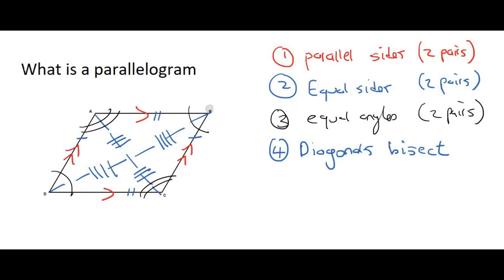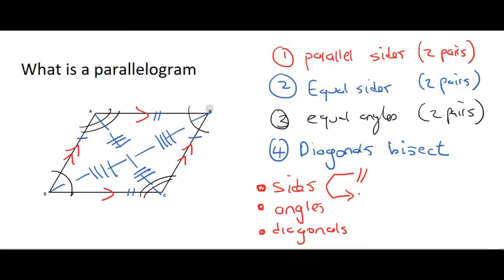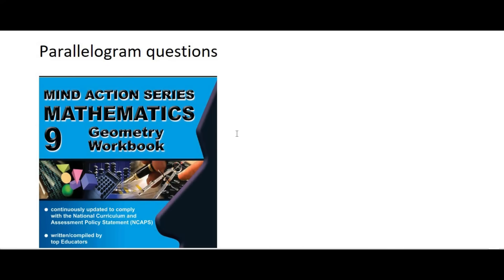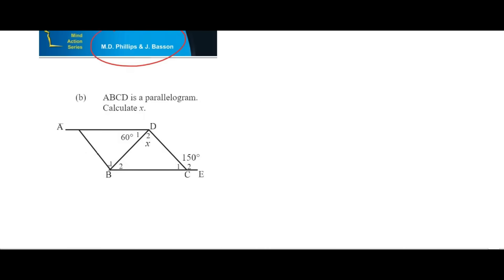So to recap: when studying shapes, always consider the sides, the angles, and the diagonals. For a parallelogram, the opposite sides are parallel and equal, the opposite angles are equal, and the diagonals bisect each other. The book I'm using is the Mind Action Series — one of the best geometry books in my opinion, used by many schools in South Africa, written by Phillips and Bisson. It's an incredible book with lots of nice examples.